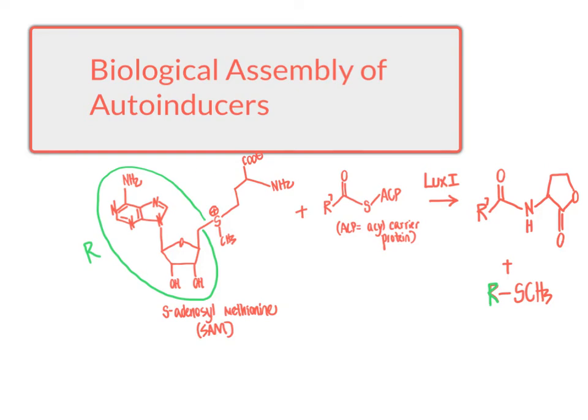In the last few videos, we've been looking at quorum sensing, the phenomenon where bacteria trigger changes in their behavior based on the accumulated concentration of a so-called autoinducer molecule. We looked at the three main classes of molecules that act as autoinducers: the acyl homoserine lactones, the modified peptides, and the autoinducer two boron-containing molecule. In this video, we're going to look more deeply at how bacteria assemble these autoinducer molecules, because within each bacterium there must exist pathways by which these compounds are assembled.